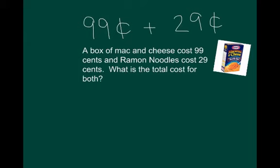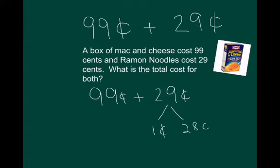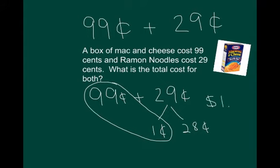Let's take a look at using branching with some different measurements. So here for example we have a box of mac and cheese cost 99 cents and ramen noodles cost 29 cents. What's the total cost for both? So we're going to use the branching strategy for this. Thinking about landmark numbers, I can go ahead and think of it as 99 plus 29 cents. And this is what we do a lot of times in the grocery store, don't we? We do a compensation method where we think about adding 1 cent to the 99. So now 99 cents plus 1 cent equals a dollar and 28 cents. So that landmark is the dollar.